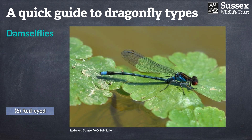The last grouping are the red-eyed damselflies. The eagle-eyed amongst you may have noticed that the previous red damselfly also had red eyes — and you're absolutely correct — but for the purposes of this red-eyed group, these ones actually have a different body colour to the coloration of their eyes. Just two species of these in the UK as well.